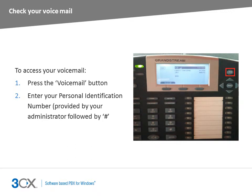Using your Grandstream phone, you can check your voicemail by pressing the message button. This will automatically dial the voicemail number. Once you have connected to your voicemail, you will be asked to enter your PIN. You can find the PIN for your extension in the email that was sent to you when your extension was created.